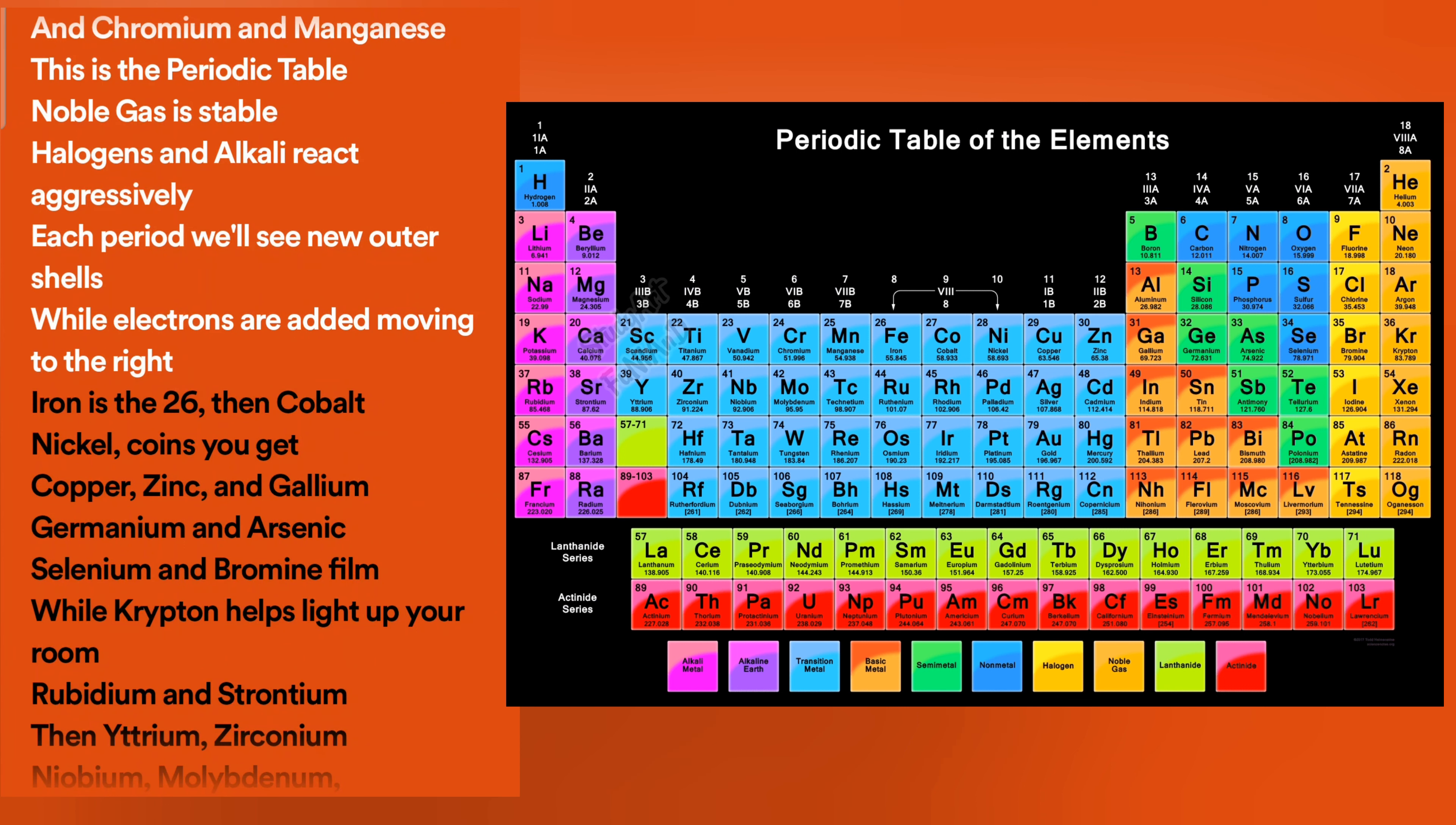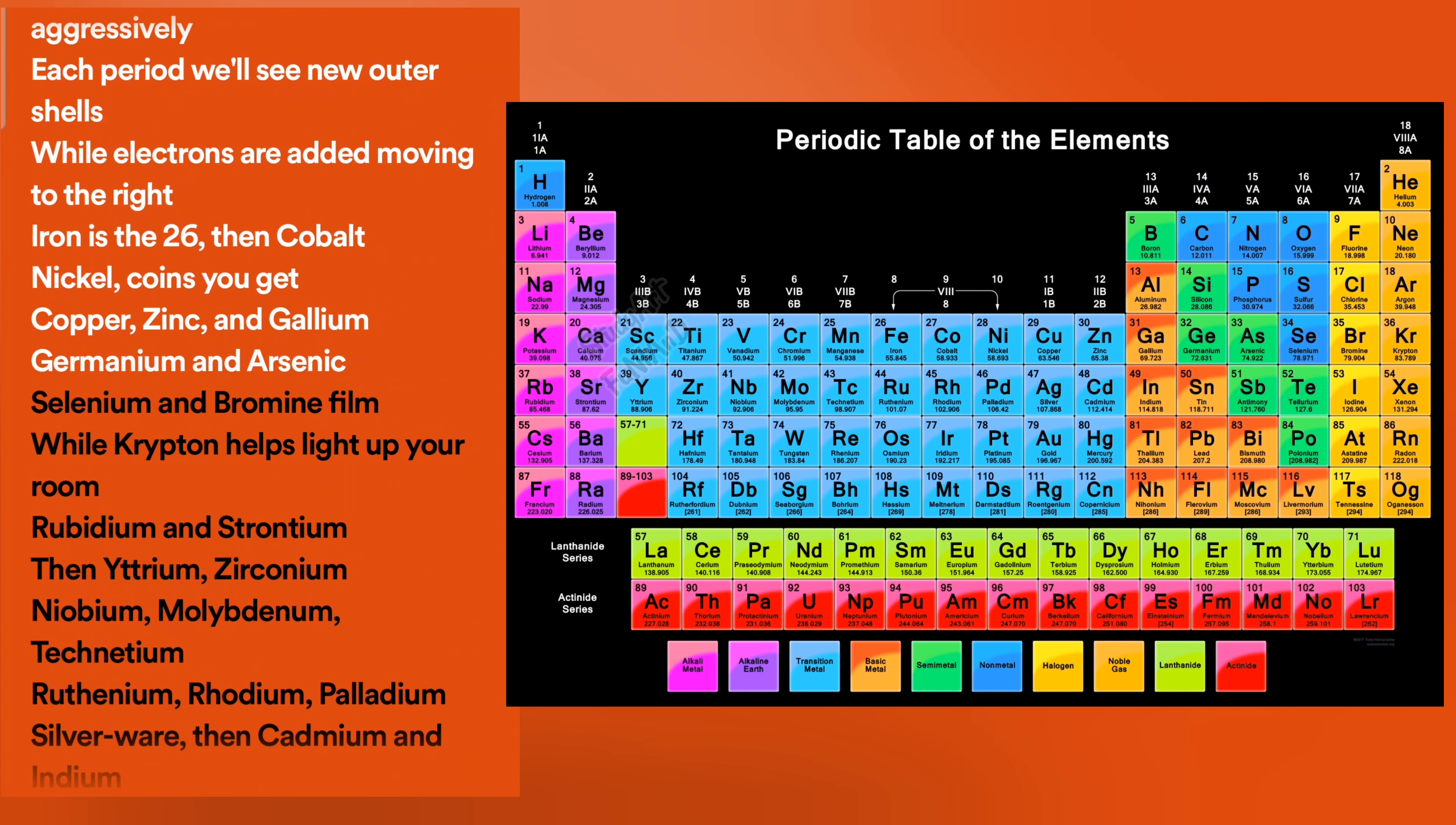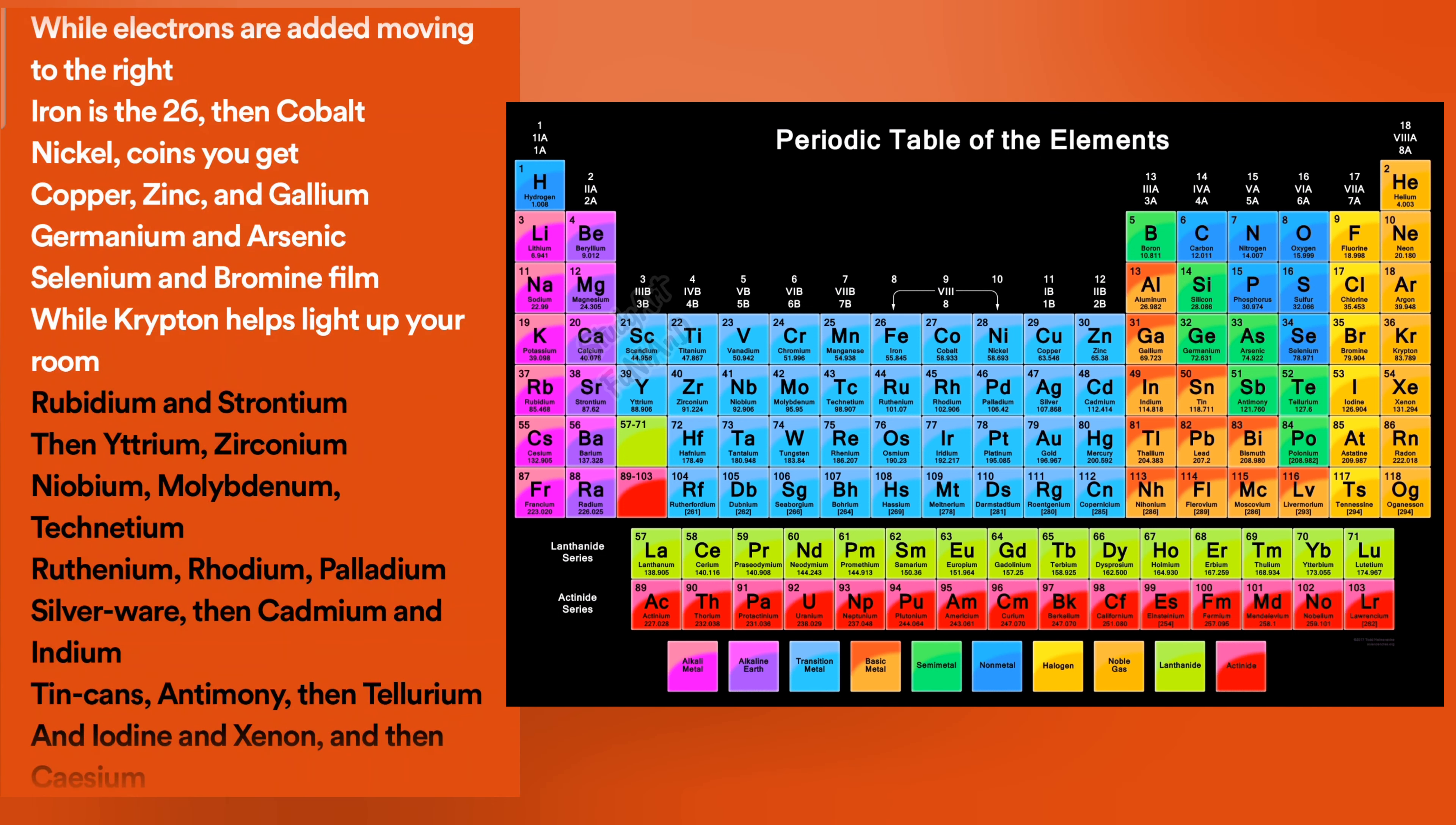moving to the right. Iron is the 26th, then cobalt, nickel coins you get. Copper, zinc, and gallium, germanium, and arsenic. Selenium and bromine film, while krypton helps light up your room.